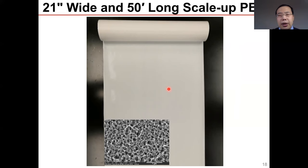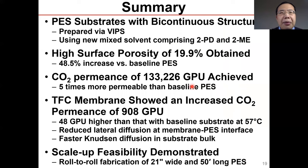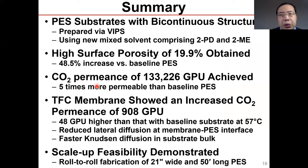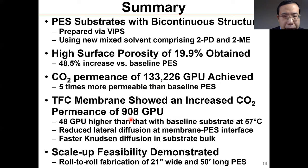Based on the newly prepared substrate using the new solvent system, we scaled this up to 21 inches wide and 50 feet long. The surface morphology of the scaled-up substrate shows bicontinuous structure throughout, and the CO2 permeance of the scaled-up substrate is also on the order of 133,000 GPU — demonstrating that we can scale this up very nicely. In summary, we prepared a PES substrate with bicontinuous structure using the new mixed solvent system of 2PD and 2ME, achieving high surface porosity of 19.9% and very high CO2 permeance of 133,000 GPU. The composite membrane showed an increased CO2 permeance of 908 GPU, and the scale-up feasibility of the new substrate was demonstrated.